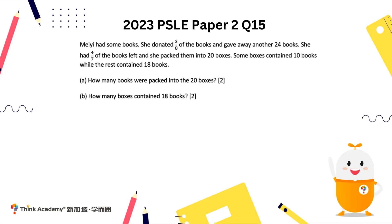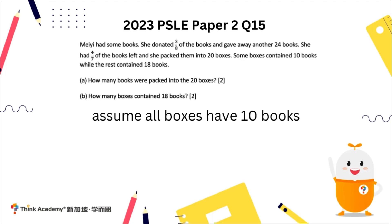Now using this value of 256, we apply the assumption method, which is the main focus for this type of question — that's Part B. Remember, we always look at what we are asking for first: we are trying to determine the number of boxes that contain 18 books. We always start with the opposite first, which means we look at boxes of 10. So assume all 20 boxes have 10 books, giving us 10 times 20, which is 200 books.